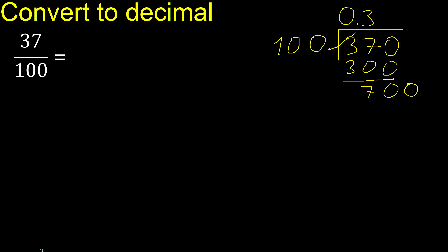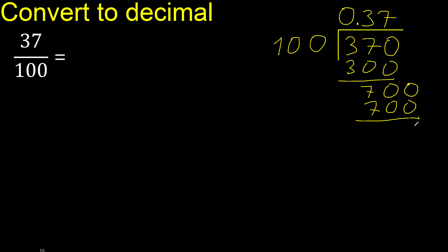100 multiplied by which number? Multiplied by 7 is 700. Subtract 0. 0, therefore finish.